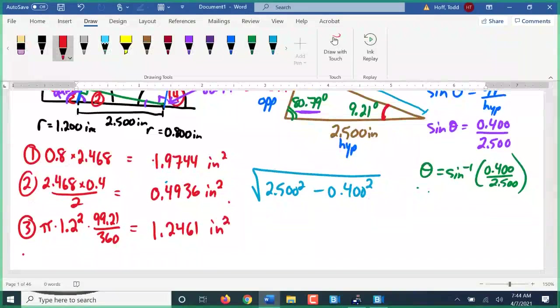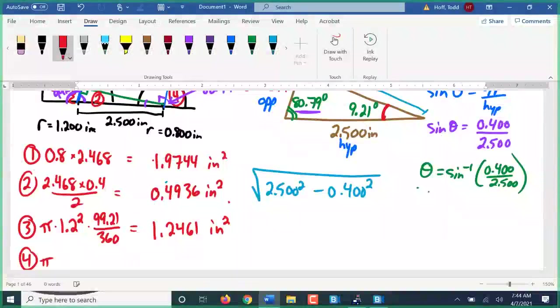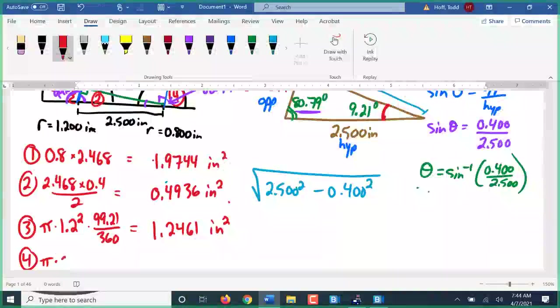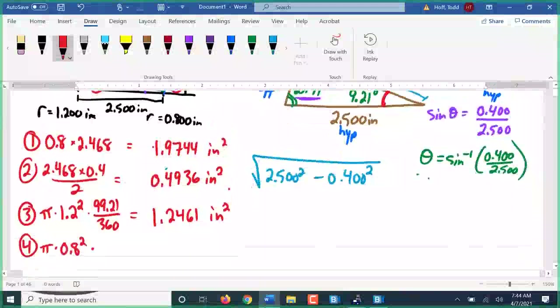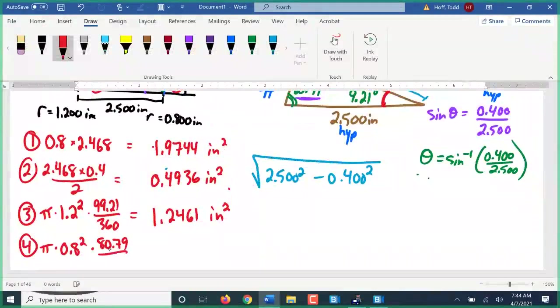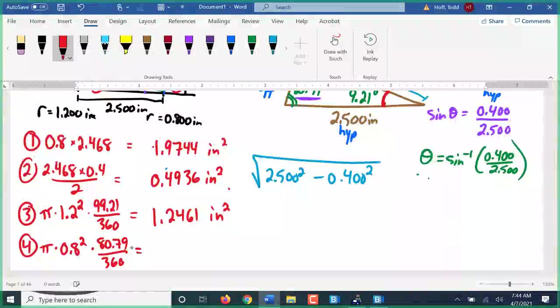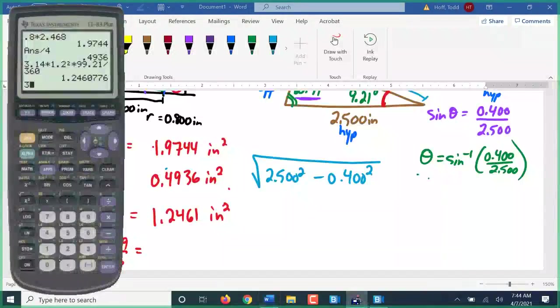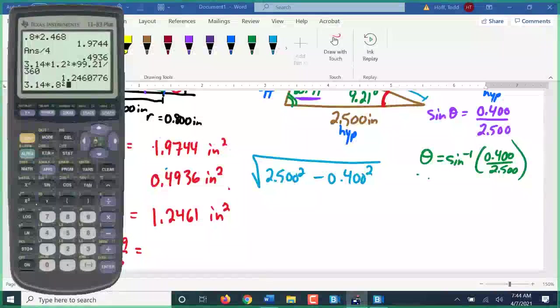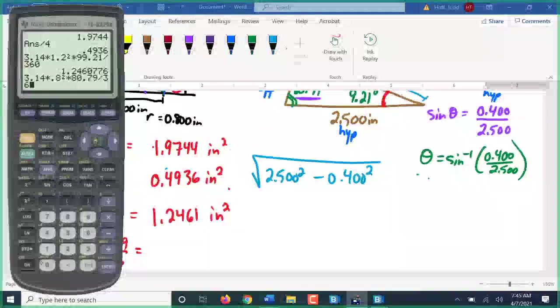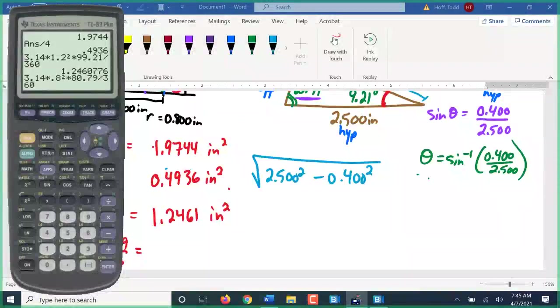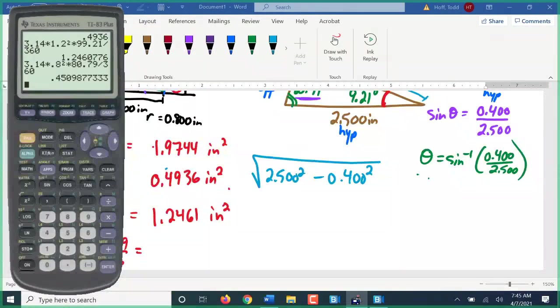How about piece 4? So again, pi times 0.8 squared is the area of the whole circle. Times the 80.79 divided by 360 is the ratio of the circle. 0.4510.